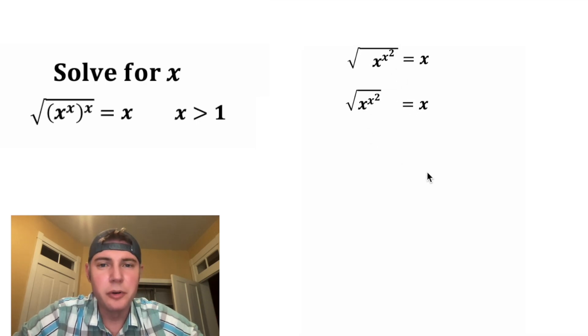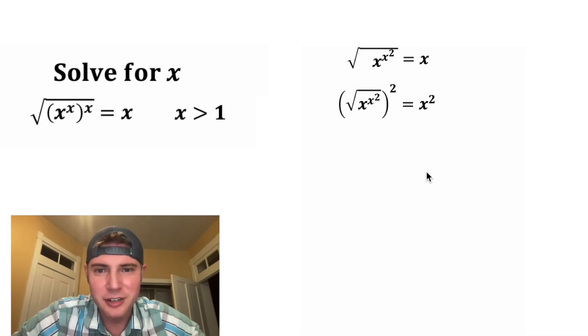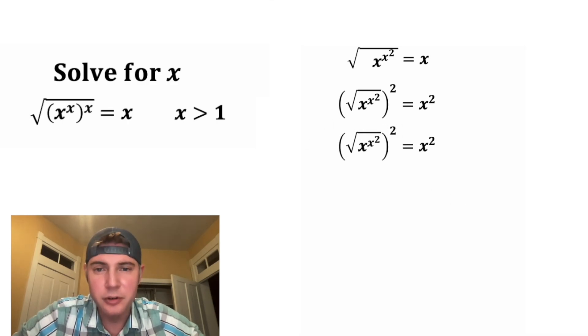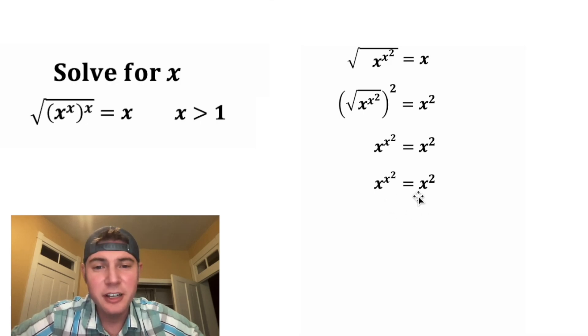And next, to get rid of this square root, let's square both sides of the equation. So this exponent and this square root are going to cancel each other out. So now we have x to the x squared equals x squared.